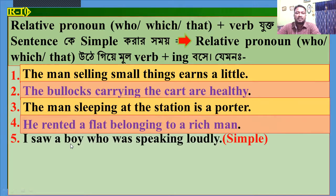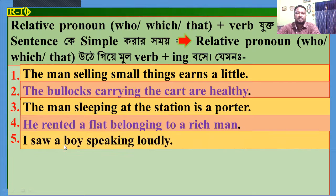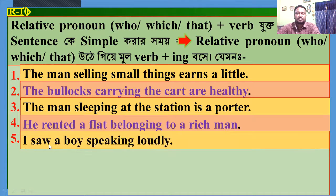Number 5: 'I saw a boy who was speaking loudly.' Make it simple. Dear students, here 'who' is the relative pronoun and 'speaking' is the principal part. So, the answer will be: 'I saw a boy speaking loudly.'